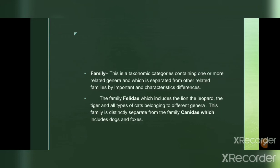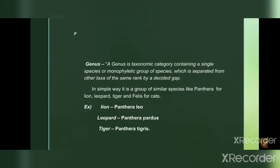Genus is even more specific than family. The genus forms the first name in binomial nomenclature, followed by the species name. The scientific name is always italicized; the genus name is capitalized. For example, Homo sapiens — 'Homo' is the genus and 'sapiens' is the species. A taxonomic genus consists of several species with similar characteristics but different from other species. For example, Panthera includes lion, leopard, and tiger; Felis includes cats.